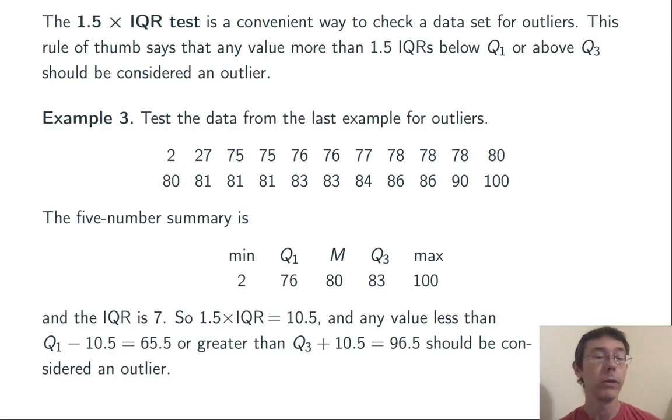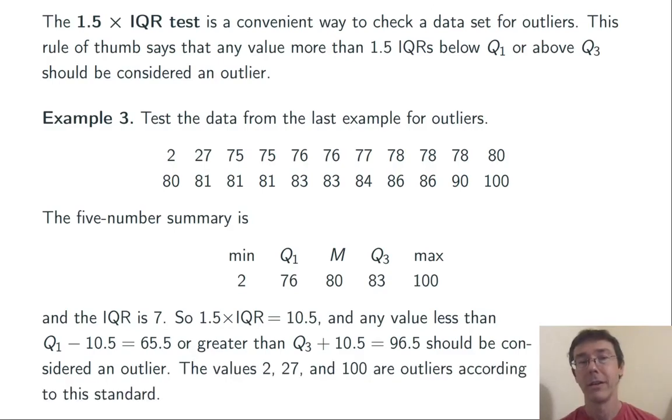So between 65.5 and 96.5, that's going to be the range where we do not consider values to be outliers. Anything less than 65.5 or greater than 96.5 should be considered an outlier according to this standard. The values 2, 27, and 100 are outliers according to this standard.